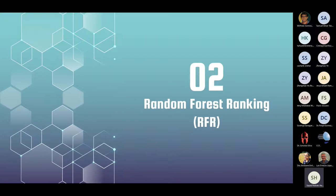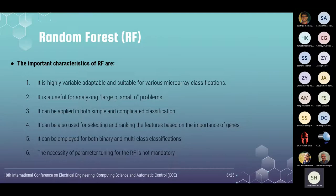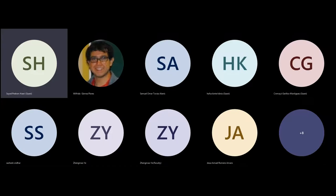The purpose of feature selection is reducing memory consumption, decreasing time complexity, increasing the chance of finding optimal solutions, and eliminating redundant and irrelevant features, and reducing dimensionality and removing noisy features from our dataset. The important characteristics of random forest are that it is highly variable, adaptable, and suitable for various microarray classification. It is useful for analyzing large or small problems, and we can apply it in both simple and complicated classification. We can use it for selecting and ranking the features based on the importance of genes, for both binary and multiple classification. The necessity of parameter tuning for the random forest is not mandatory.